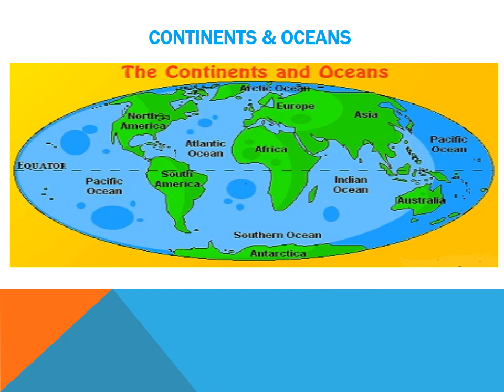Children, there are seven continents: North America, South America, Europe, Asia, Africa, Australia and Antarctica. The five oceans are the Pacific Ocean, the Atlantic Ocean, the Indian Ocean, the Arctic Ocean and the Southern Ocean.